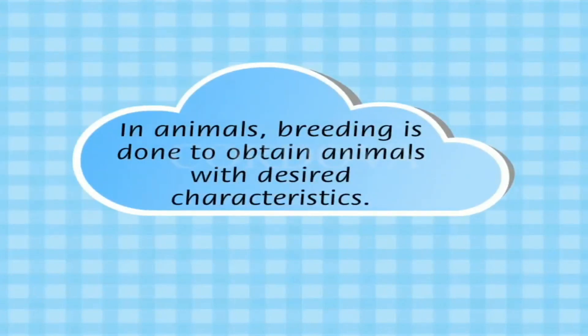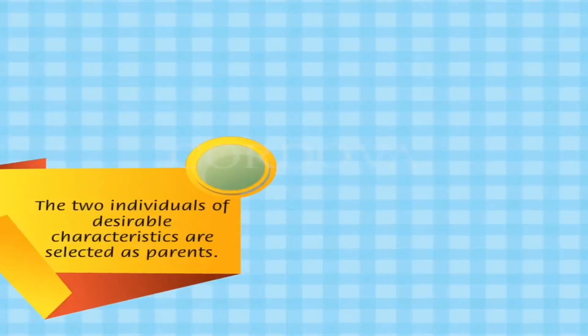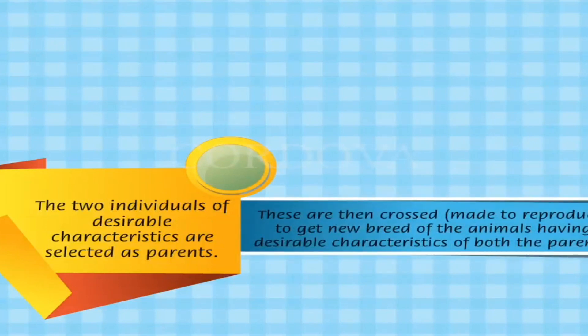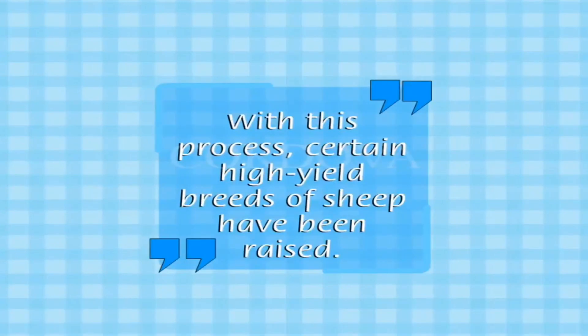In animal breeding, two individuals with desirable characteristics are selected as parents. These are then crossed to reproduce to get a new breed of animals having desirable characteristics of both the parents. This is called selective breeding.